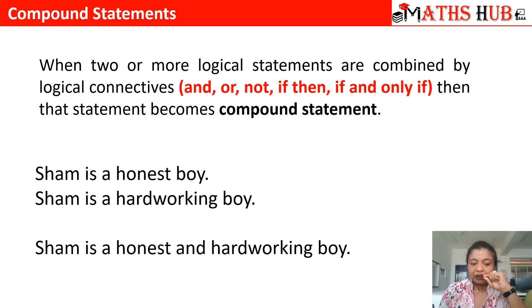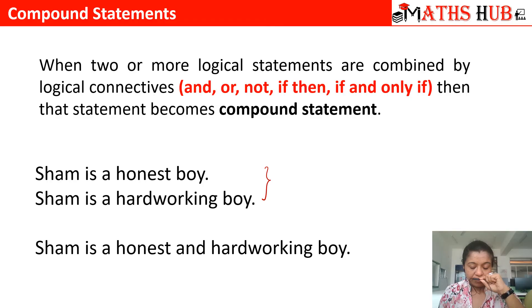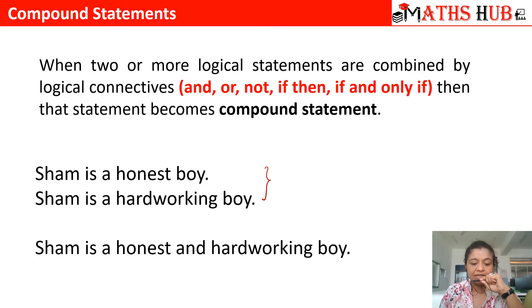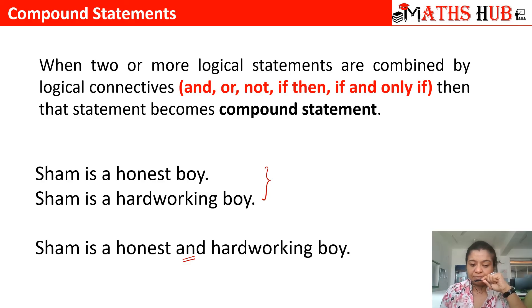For example, we have two simple statements: 'Charm is an honest boy' and 'Charm is a hardworking boy.' If I connect them with the 'and' connector, it becomes 'Charm is an honest and hardworking boy.' This will no longer be called a simple statement — it will be called a compound statement.